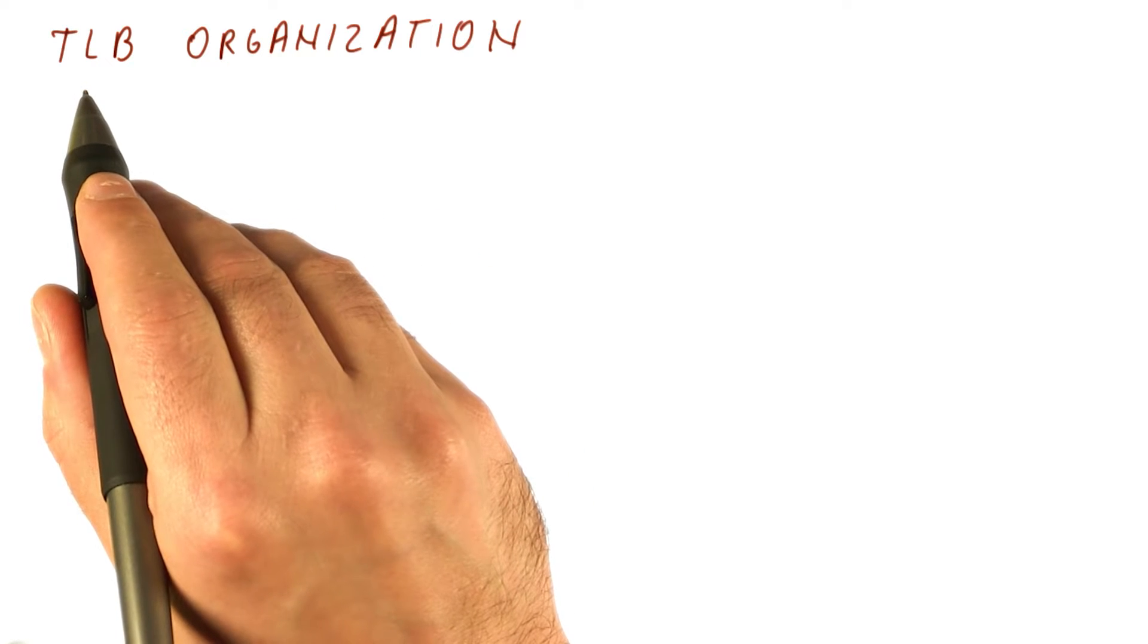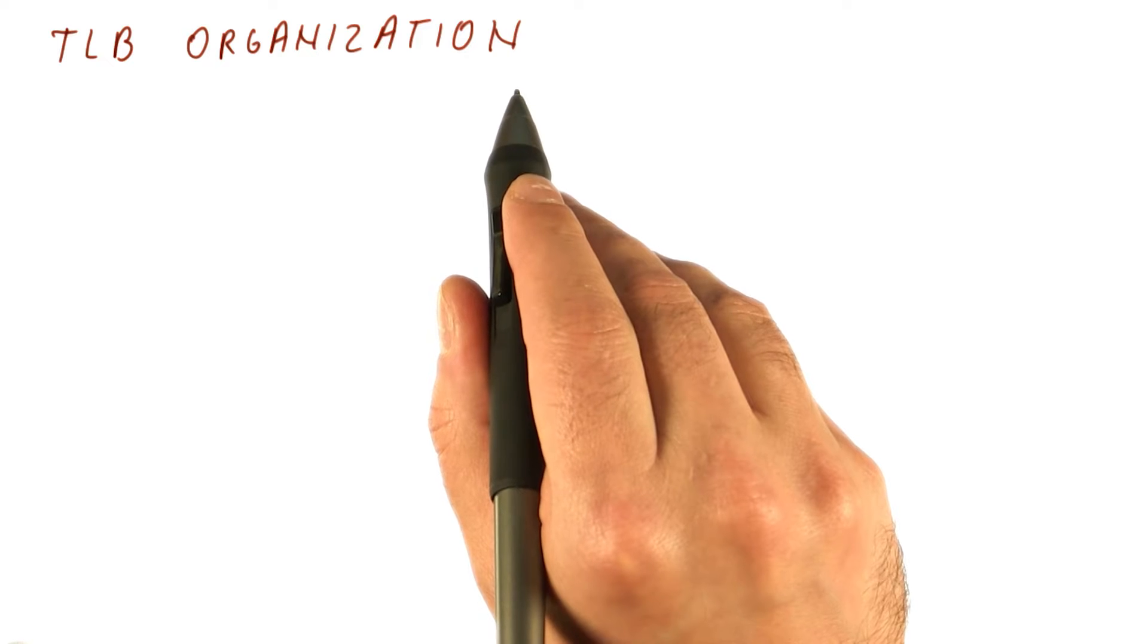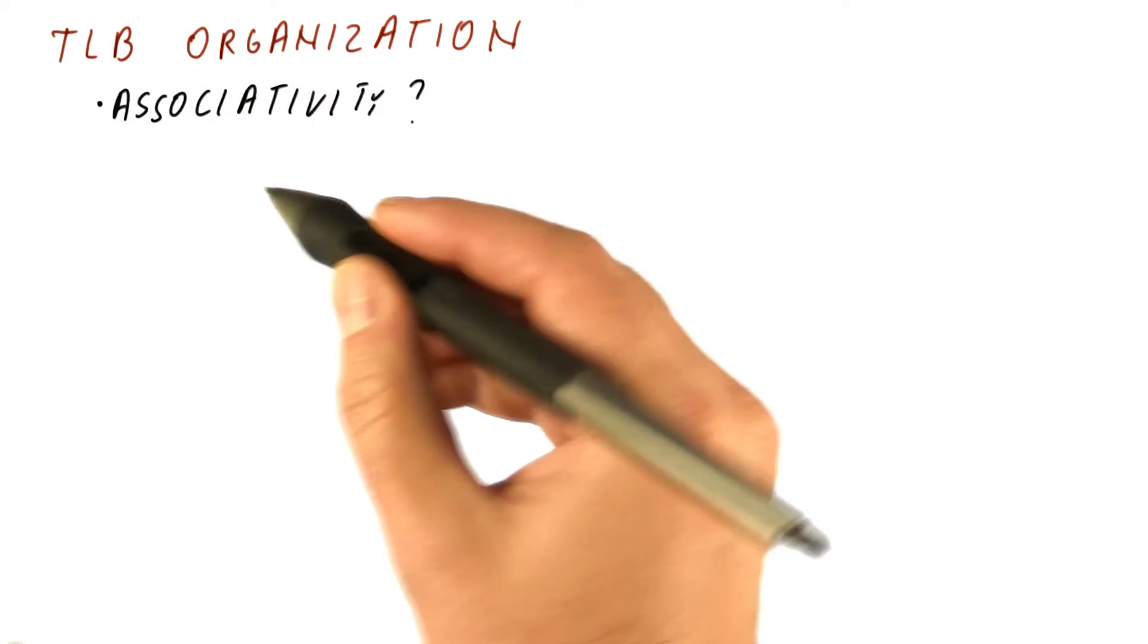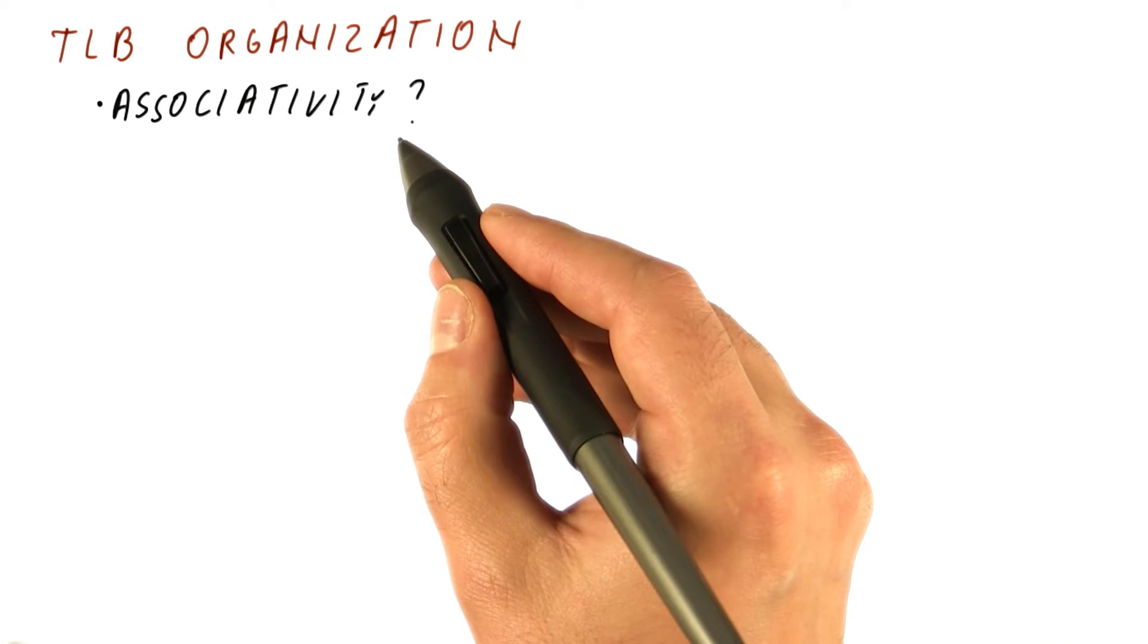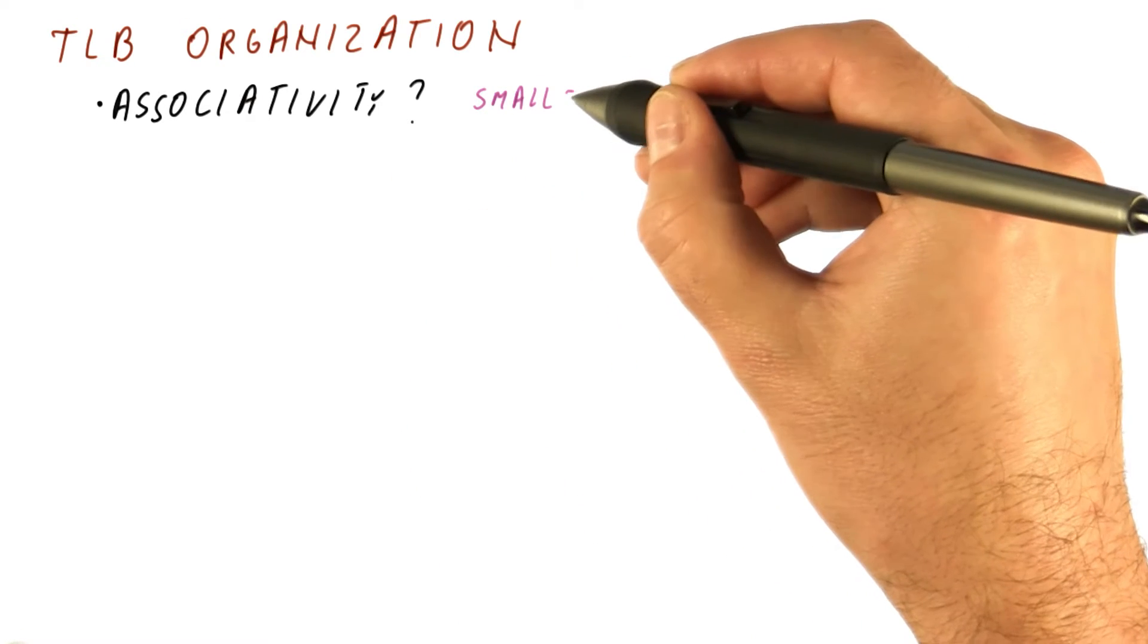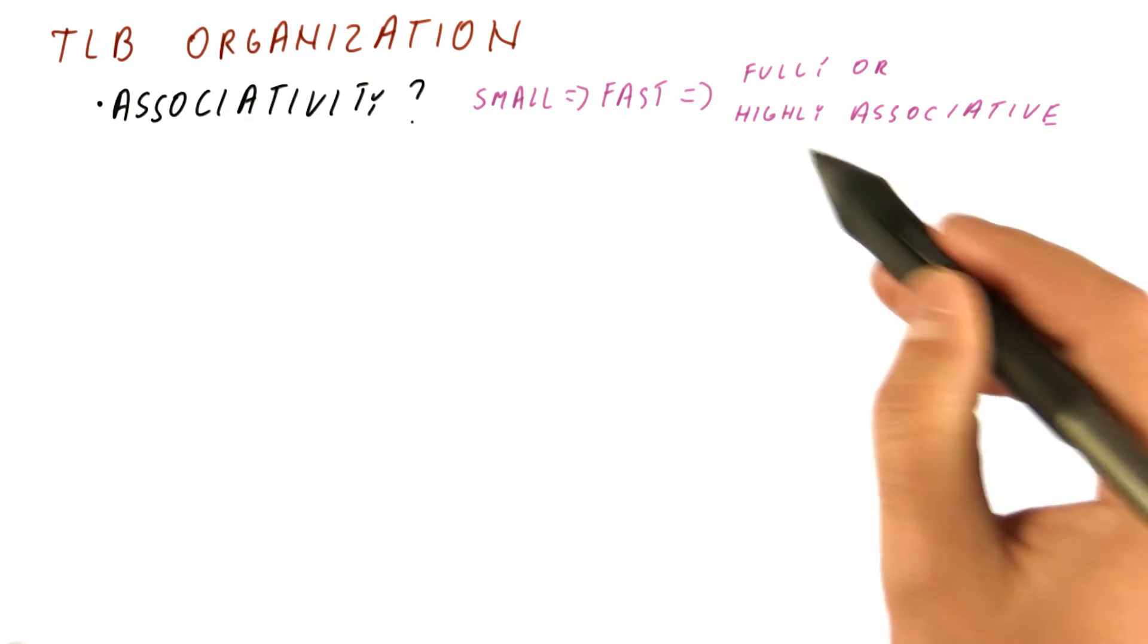Because TLB is kind of like a cache, let's talk about how it is organized in terms of cache properties. First, is it direct map, or fully associative, or somewhere in between? Well, it is small, so it is already very fast. So it tends to be fully or highly associative.